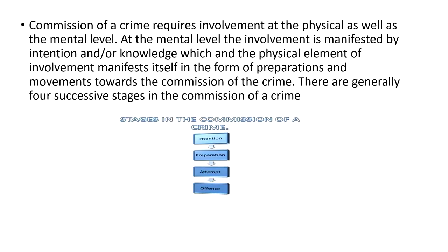Whenever a person with intention and preparation does anything towards the commission of the crime, what circumstances would count that as an attempt even if it fails? And under what circumstances would a failed act not amount to an attempt? Commission of a crime requires involvement at the physical as well as the mental level. At the mental level, the involvement is manifested by intention or knowledge, and the physical element manifests itself in the form of preparations and movements towards the commission of the crime. There are generally four successive stages in the commission of a crime — successive because it is only when the first stage is completed that we move on to the next.